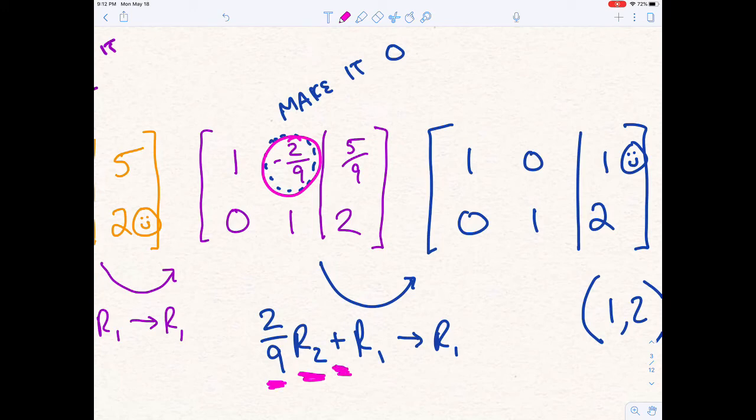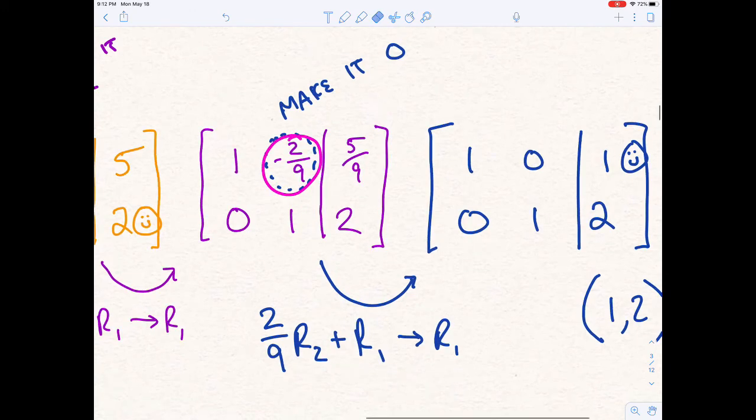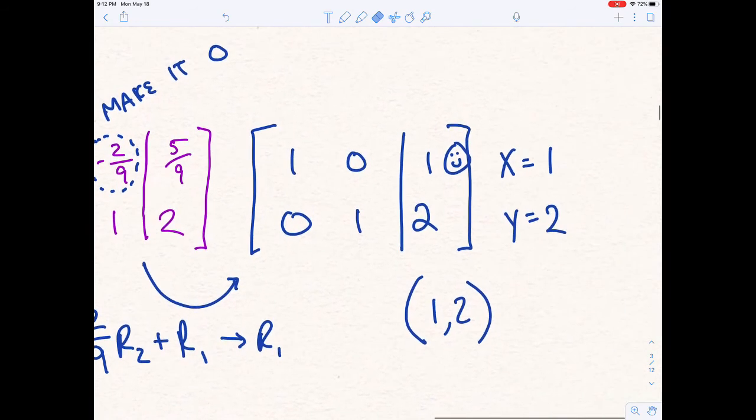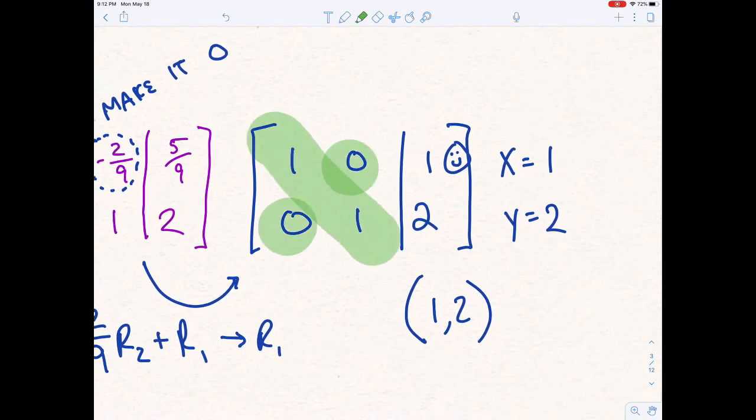And we're going to replace it and put it in row 1. So doing all of that stuff is going to go ahead and give us a 0 in that spot. We now have our diagonal 1s, we have our 0s, and we have our second smiley face. Second smiley face, of course, means we have our second answer. x is 1, y is 2, and done.